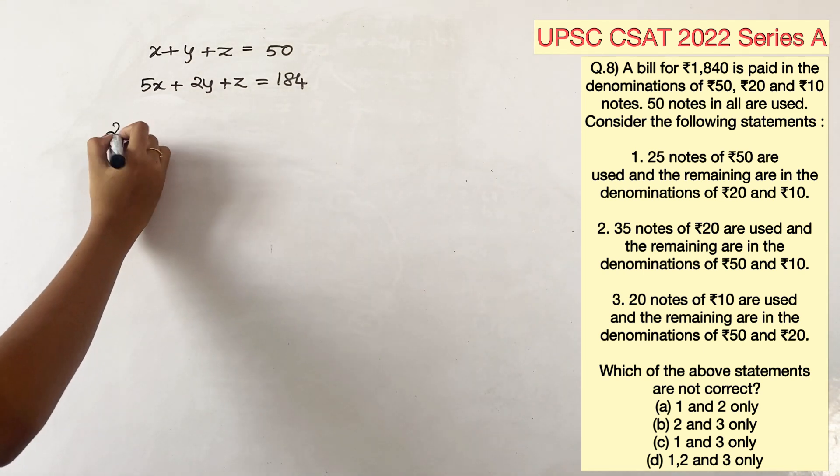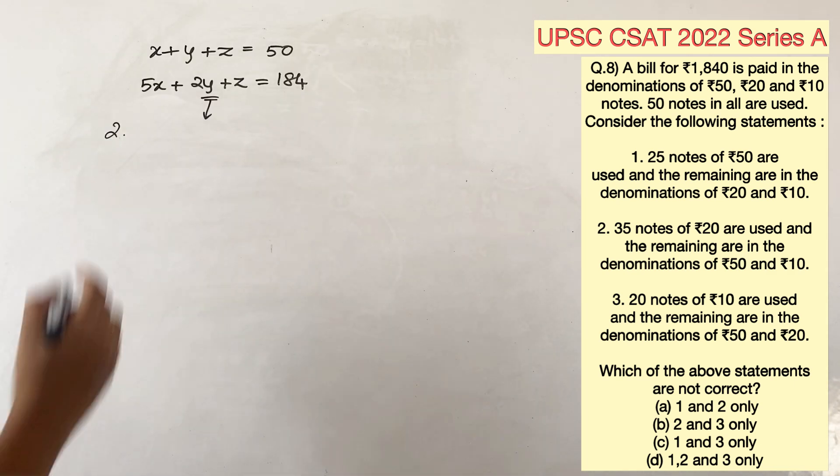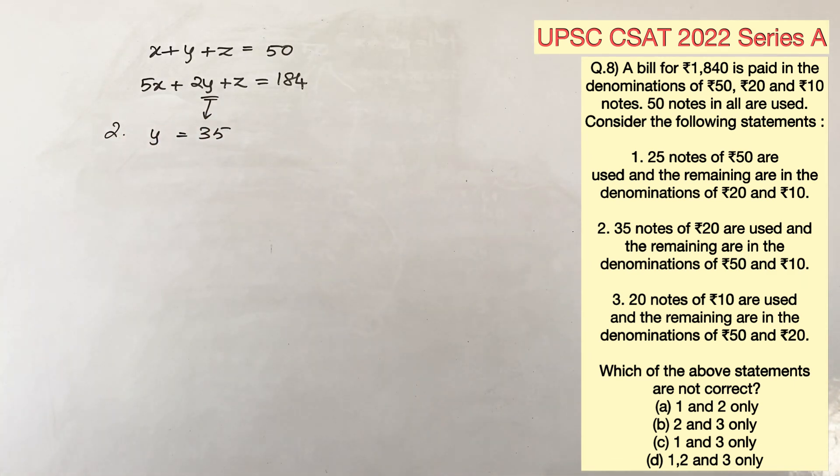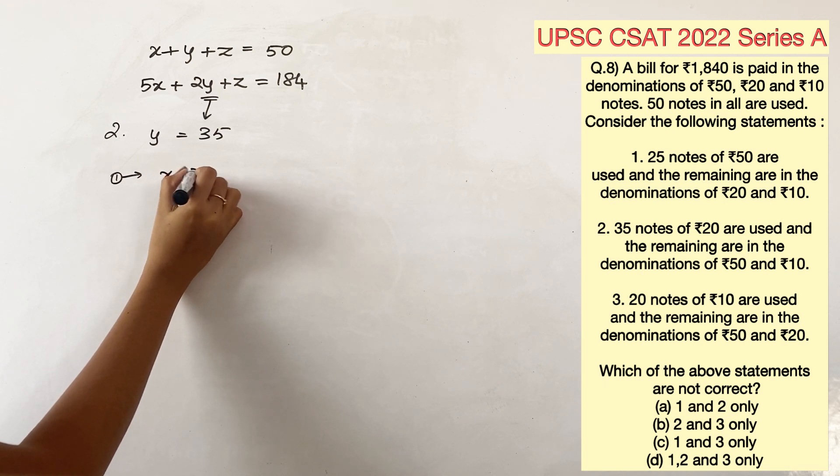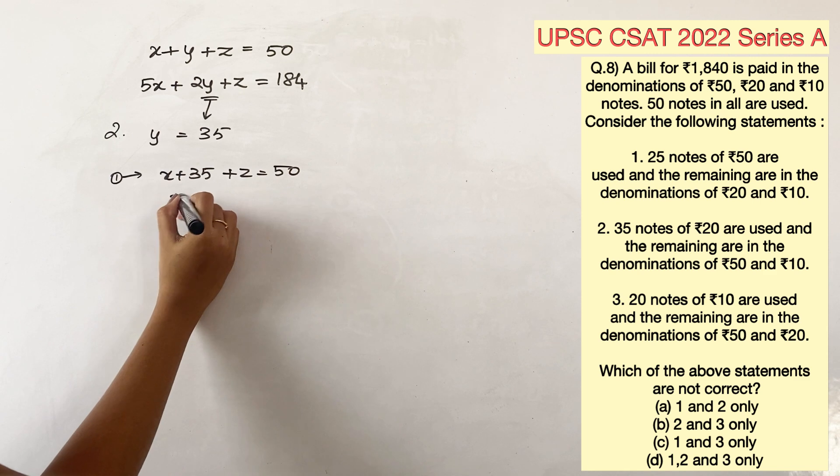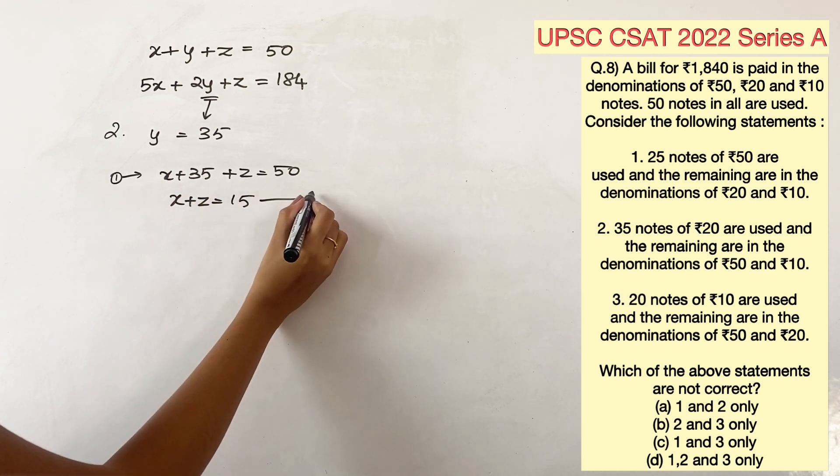The second statement says 35 notes of 20 are used, and the remaining are in denominations of 50 and 10. So, y is equal to 35. Substituting y in both equations, the first equation would be x plus 35 plus z is equal to 50. x plus z is equal to 50 minus 35, which is 15.